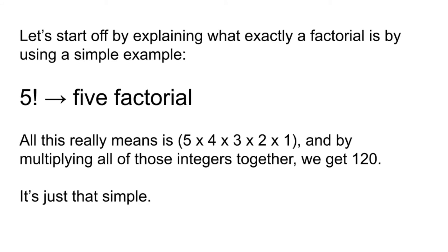5 factorial — that's 5 followed by an exclamation mark. All this really means is 5 times 4 times 3 times 2 times 1, and by multiplying all of those integers together, we get 120.